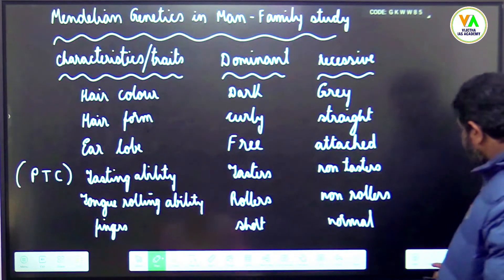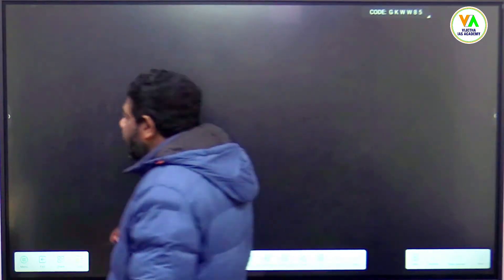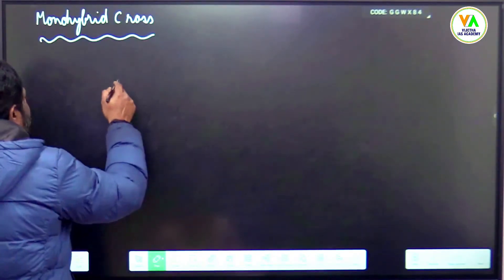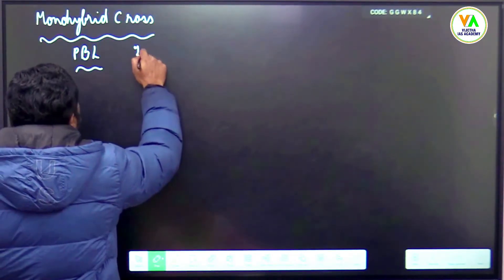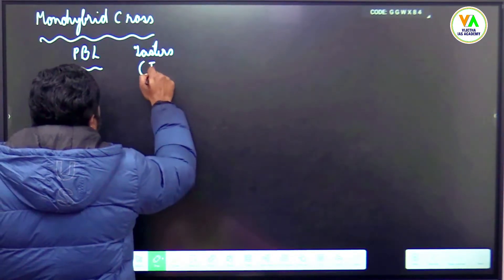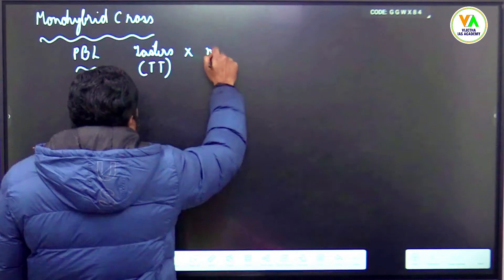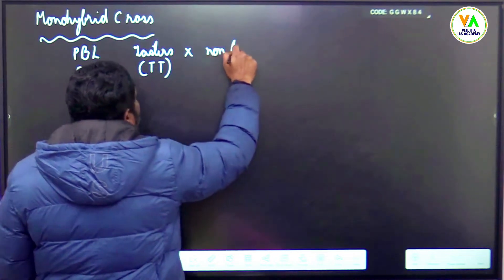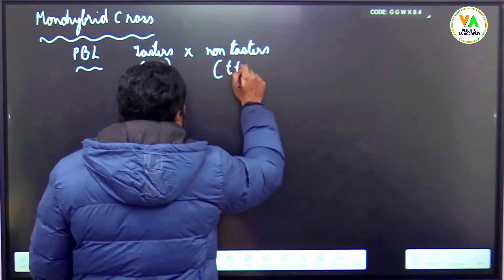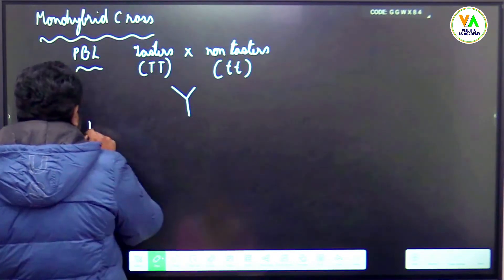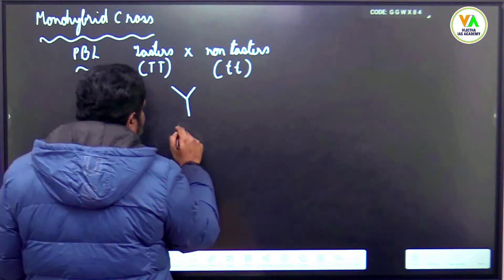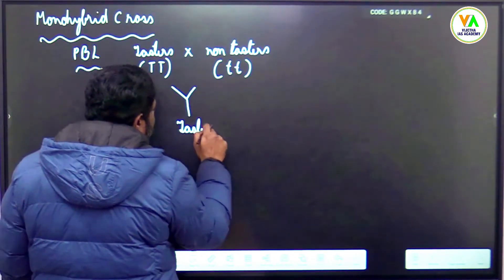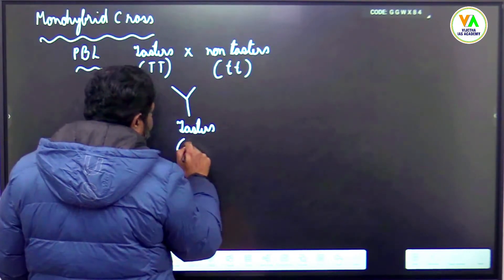Now, how do we perform a monohybrid cross in humans? For example, take tasters (TT) crossed with non-tasters (tt). What do you get? In the F1 generation, you get tasters who are capital T — heterozygous tasters (Tt).